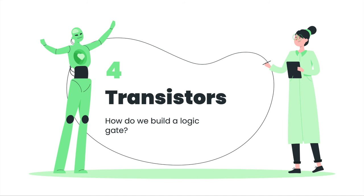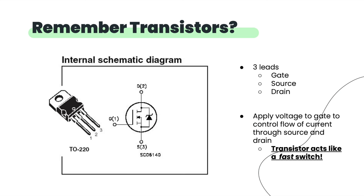Now that we have a high-level understanding of logic gates, let's dive into how transistors are used to create them. Can you identify whether this is an NPN, BJT, or MOSFET transistor? This is actually a MOSFET — it has the metal oxide side, which is how you identify it. MOSFETs are generally used for logic design because they're much faster and don't require as much power.